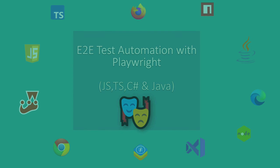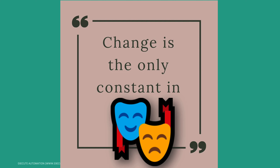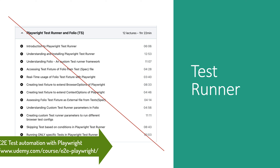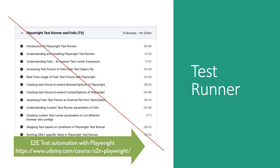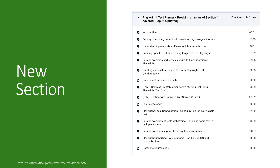If you've heard the saying that change is the only constant in life, it is very relevant for Playwright because there have been so many breaking changes recently. These changes have made one of my course sections completely obsolete. That section is from my Udemy course on end-to-end test automation with Playwright for C#, JavaScript, Java, and TypeScript language bindings.